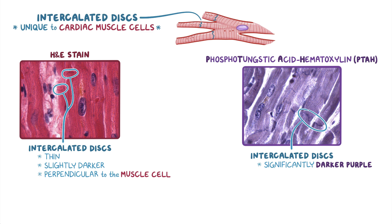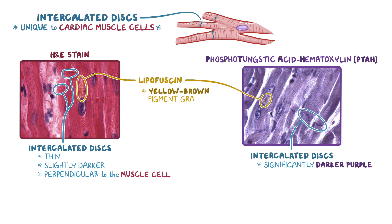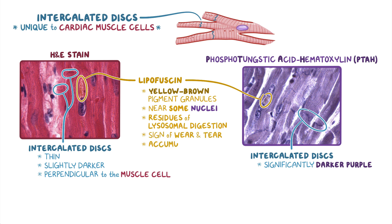Whether the section of cardiac muscle was stained with H and E or PTAH, lipofuscin will be seen as yellow-brown pigment granules found near some nuclei. These granules are residues of lysosomal digestion, and they're considered to be a sign of wear and tear that accumulate in cardiac muscle tissue with age.